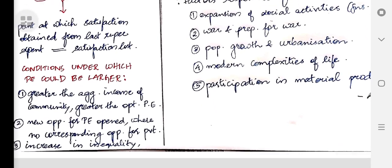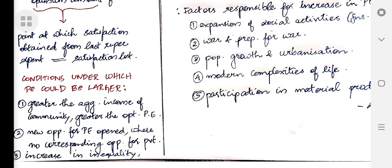Pigou also gives some conditions under which public expenditure could be larger. First, the greater the aggregate income of the community, the greater is the optimum amount of public expenditure. Second, new opportunities for public expenditure are opened where there are no corresponding opportunities for private expenditure — if such opportunities exist for the public sector but not the private sector, then optimum public expenditure will be larger.